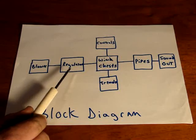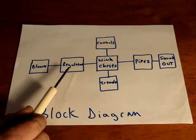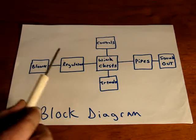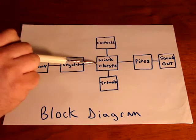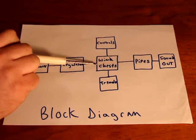You want the pressure to stay the same so that you don't notice any changes in volume or the way the pipes speak. The regulator feeds the different wind chests. The wind chests are where the pipes sit.